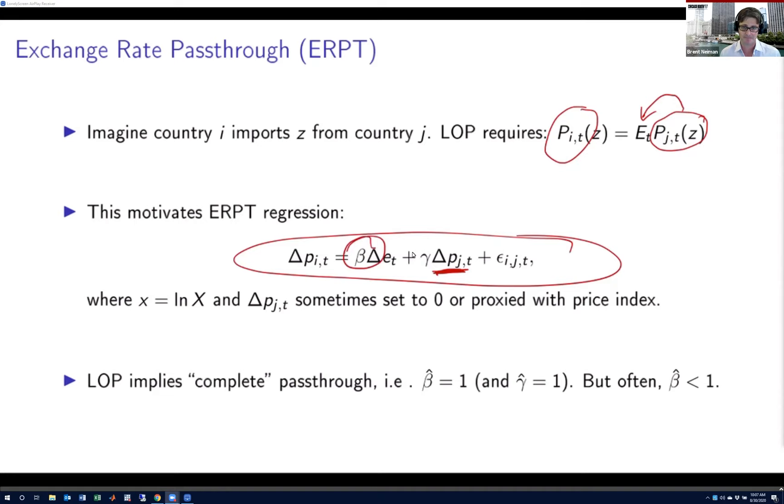This exchange rate pass-through regression is implemented in many different ways at many different levels of aggregation using many different types of data. Quite commonly, the treatment of this foreign price is either ignored or assumed away or proxied with a price index, where the pass-through coefficient of interest is this beta. The law of one price would imply a beta value equal to one. But a very long, rich literature has shown that beta estimates are almost never at one, particularly in the literature looking at pass-through into US import prices. One of the puzzles is that in recent decades, beta has been estimated at being quite low.